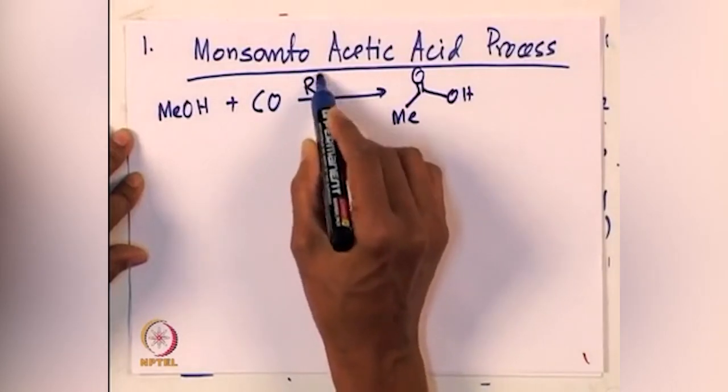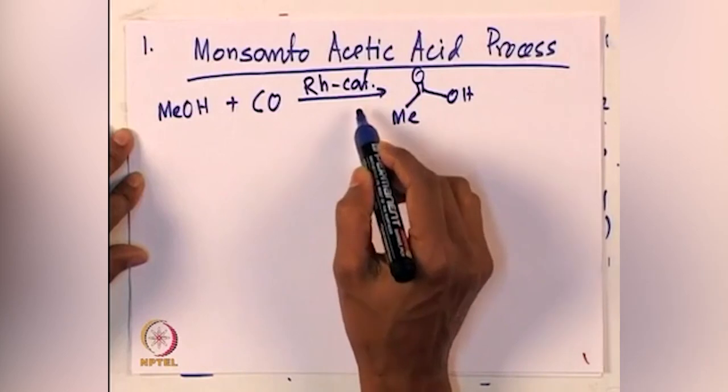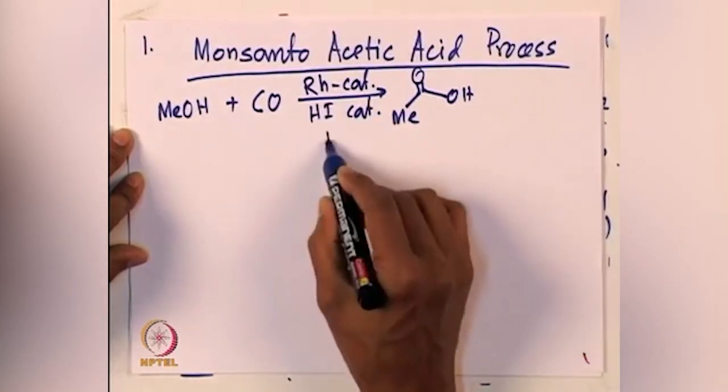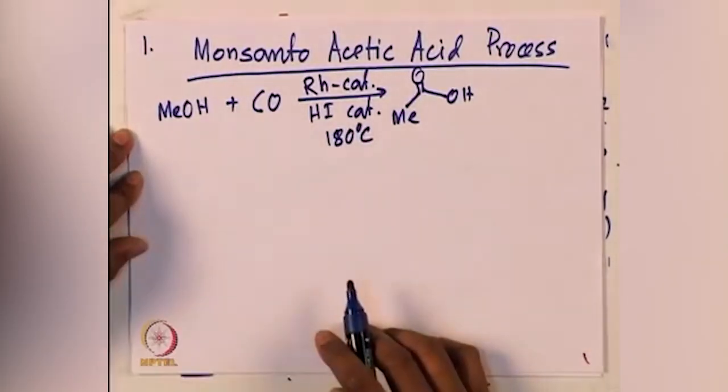Traditionally or historically, rhodium catalyst has been used, but industrially nowadays iridium catalyst is used. You also need a catalytic amount of HI, and the reaction temperature is 180 degrees centigrade. This reaction is quite interesting and is done on industrial scale — this is the industrial synthesis of acetic acid. The starting material is methanol and carbon monoxide. Both rhodium and iridium catalysts can be used, and the mechanism for both is exactly the same. Let us look at the mechanism of this reaction.